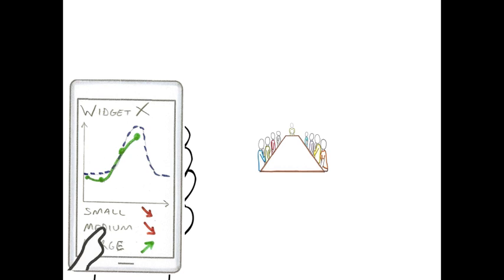And in this example, we'll be looking at Widget X to see how many sales we've made. You can see from the graph that the sales are higher than they've ever been. That's the green line. But they're below forecast, which is the dotted blue line. And if you look down the bottom of the phone, it says that the small and medium sizes are selling very poorly, but the large size is selling really well.